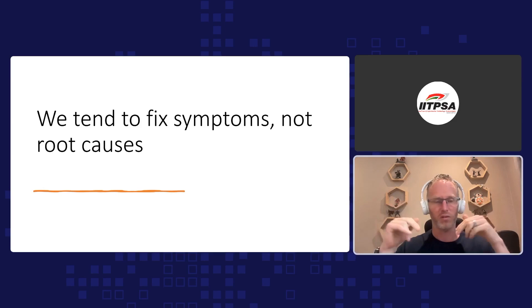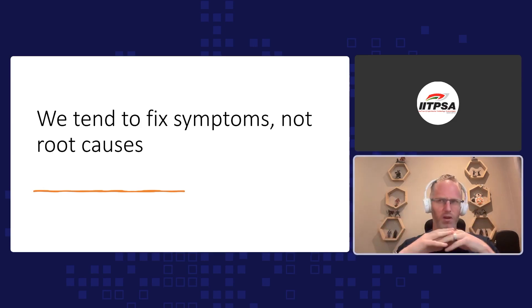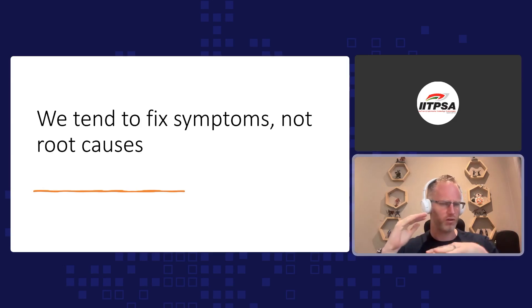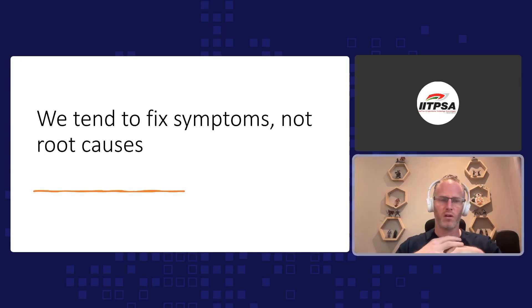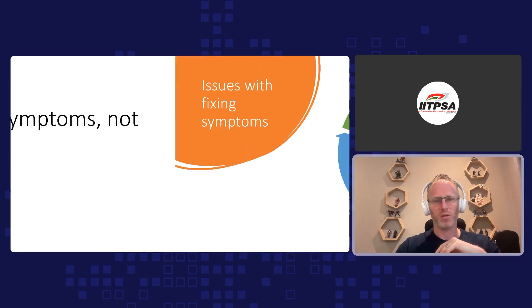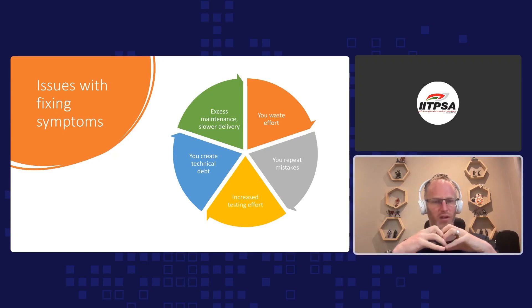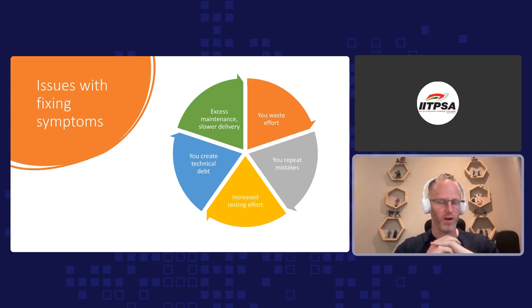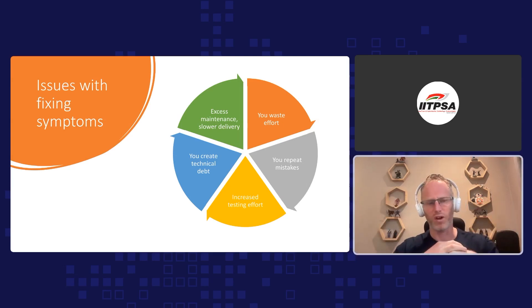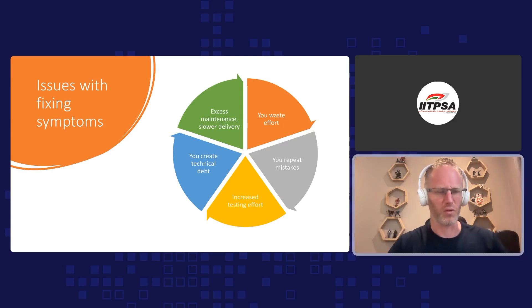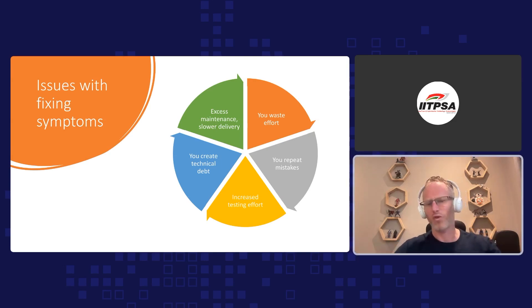We might have solved the problem that was logged, but why did it occur? What really happened? Do we really understand where in the process this particular issue, bug, or incident occurred and why? The real problem is that when we fix symptoms and not root causes, we tend to repeat mistakes a lot. We might make a coding error, fix that code error, but then every single time we're releasing software, we're making similar errors in our code or the same sort of feature constantly going down. We don't really tackle the 'why does it happen.'